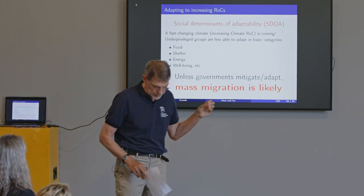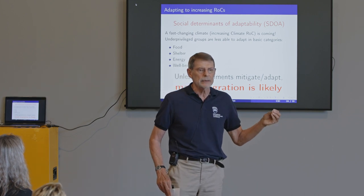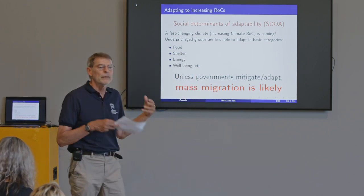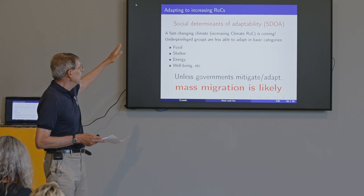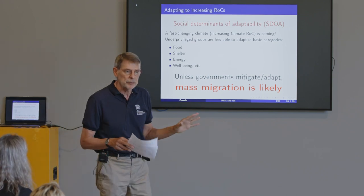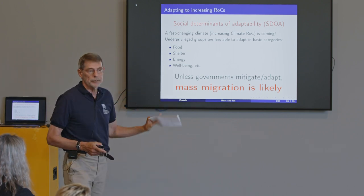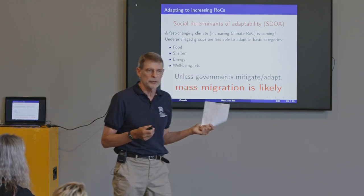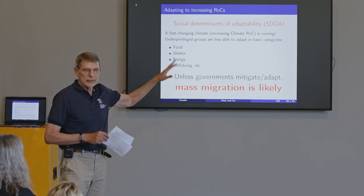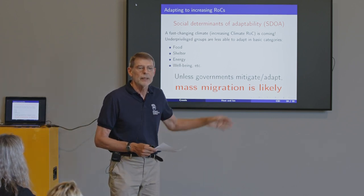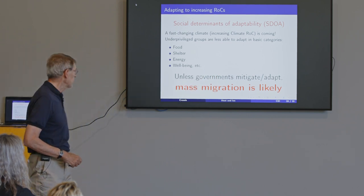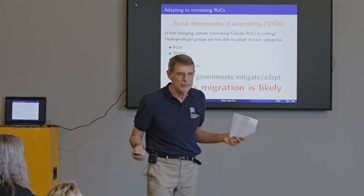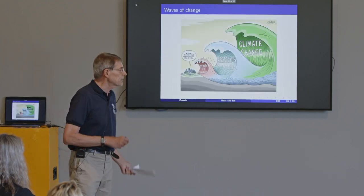I feel very strongly about this: there are going to be inequities coming at us. As we adapt, the need for food, shelter, energy, and wellbeing is going to be disproportionately spread. I've called this the social determinants of adaptability — borrowed from the term social determinants of health. Adaptability should be available to everybody, but social determinants make it unequal. There's a lot of security, military, and countries that believe mass migration is coming as people try to find a place.